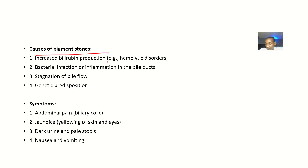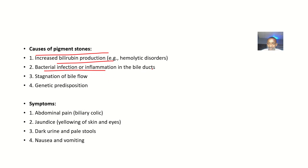The causes of pigment stones include: increased bilirubin production from hemolytic disorders, bacterial infections or inflammation in the bile ducts, stagnation of bile flow, and genetic predisposition — meaning the condition may run in families and have a genetic link.